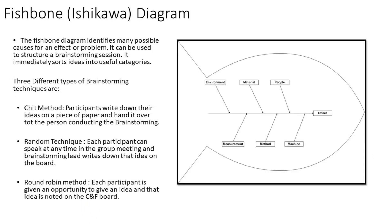The next tool is the fishbone diagram — an important tool that helps us identify many possible causes of an effect or problem. It can be used to structure brainstorming sessions and immediately sorts ideas into useful categories. There are three brainstorming techniques: the chit method, random technique, and round robin method. The six heads of the fish are people, material, environment, machine, method, and measurement. The problem or effect is kept as the head of the fish, and causes identified in brainstorming are classified into these six categories. I have a separate video on this — link in the description.